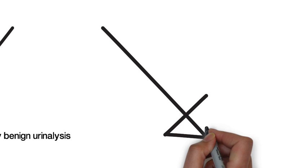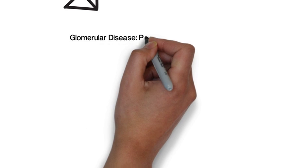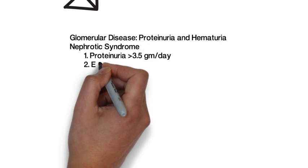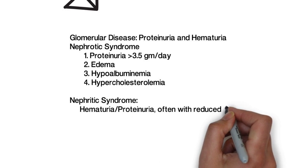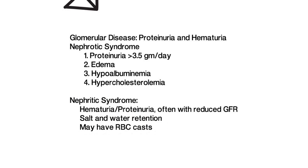The glomerular diseases are recognized by the presence of proteinuria and hematuria. The nephrotic disorders have proteinuria more than 3.5 grams with edema, low albumin, and hypercholesterolemia and are usually diseases of the podocyte.